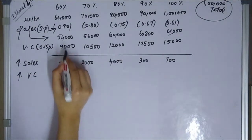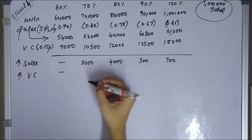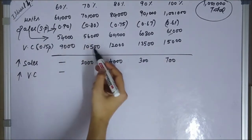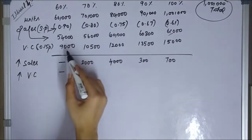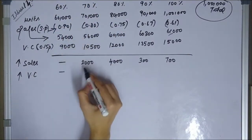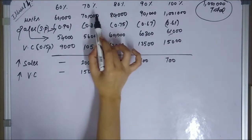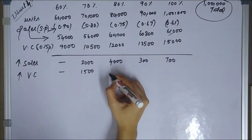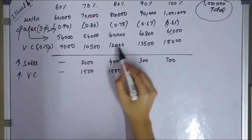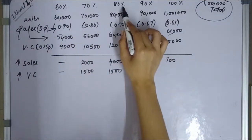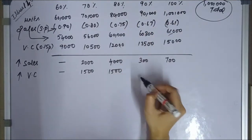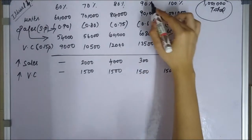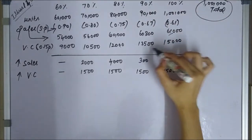For variable cost, the base is 9,000. From 60% to 70%, variable cost increases from 9,000 to 10,500 — a difference of 1,500. From 70% to 80%, the differential variable cost is also 1,500. The variable cost increases by 1,500 at each 10% increment because the variable cost per unit is constant at 0.15, so each additional 10,000 units adds 1,500.